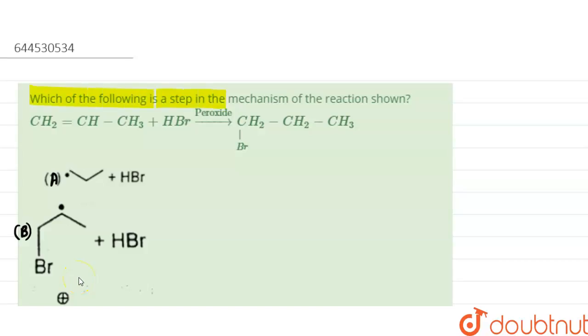The question is: which of the following is a step in the mechanism of the reaction shown? Here, our alkene is treated with HBr in the presence of peroxide to form this compound. Let us understand the reaction mechanism.